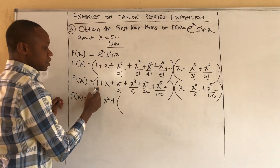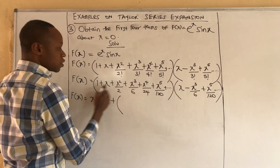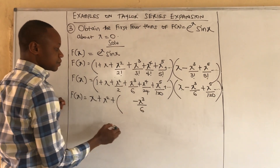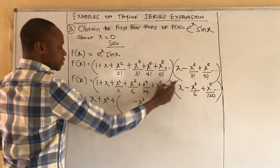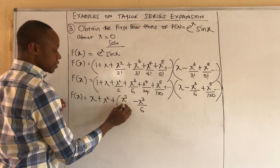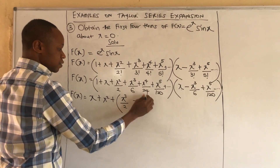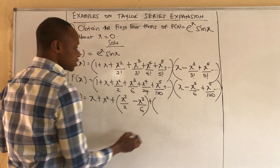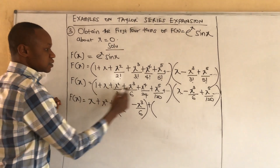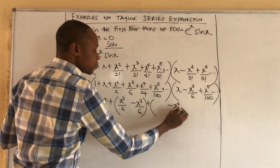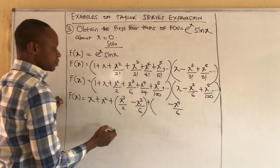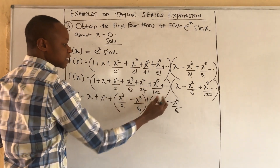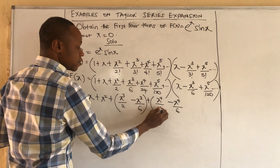The terms in x³: combining relevant products gives us positive x³/2. For the terms in x⁴: the second term times the negative x³/6 gives negative x⁴/6, and x³/6 times the first term gives positive x⁴/6, so those cancel to give zero.